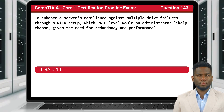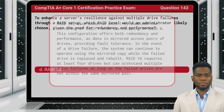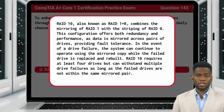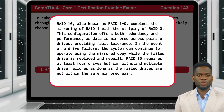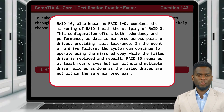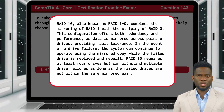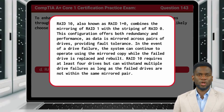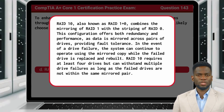The answer is D, RAID 10. RAID 10, also known as RAID 1+0, combines the mirroring of RAID 1 with the striping of RAID 0. This configuration offers both redundancy and performance, as data is mirrored across pairs of drives, providing fault tolerance. In the event of a drive failure, the system can continue to operate using the mirrored copy while the failed drive is replaced and rebuilt. RAID 10 requires at least four drives, but can withstand multiple drive failures as long as the failed drives are not within the same mirrored pair.